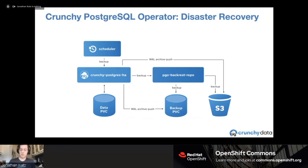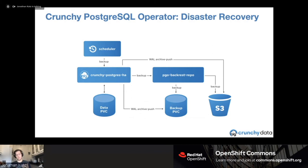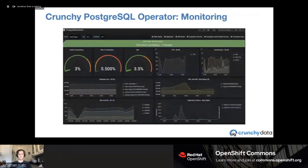For disaster recovery, we support a multi-repository setup. You can push your archives and backups to a PVC within your local OpenShift environment, or push to S3 or S3-compatible storage like MinIO, and you can support both at once — guaranteeing your backups are being pushed to multiple places. You can also schedule backups, because the easiest way to make sure you keep taking backups is to have a schedule for them.